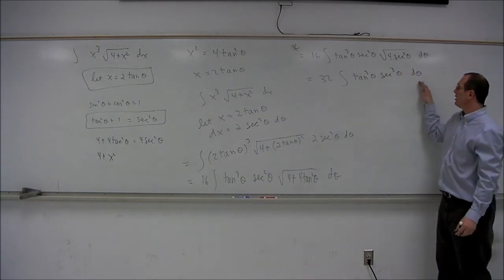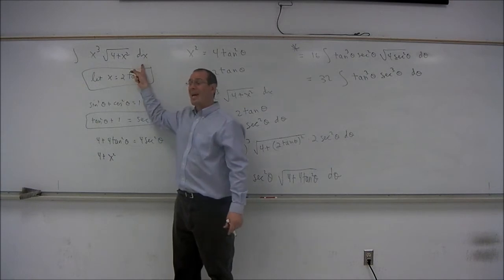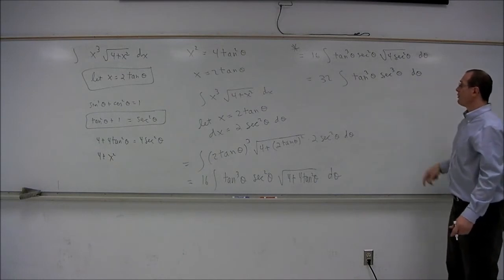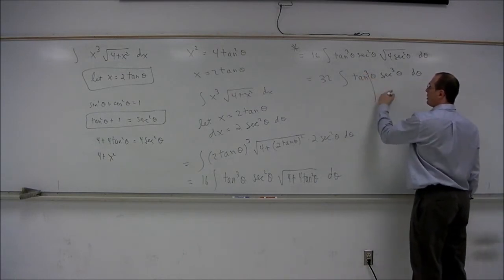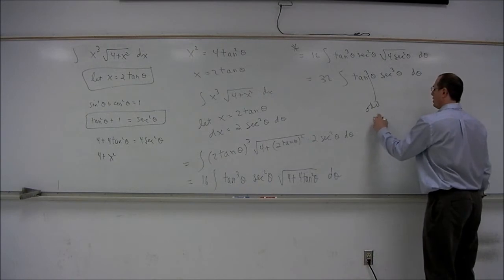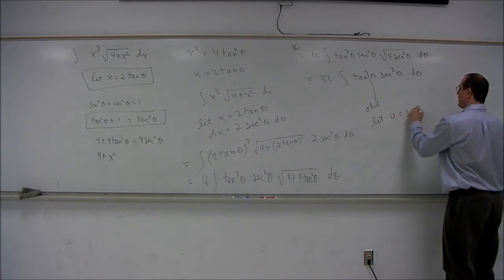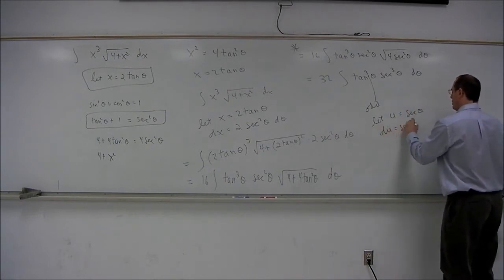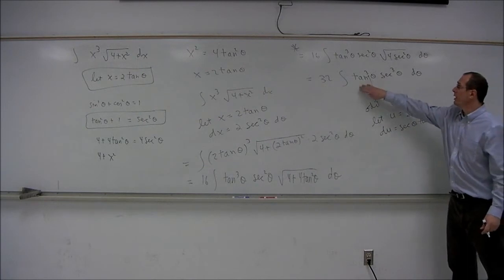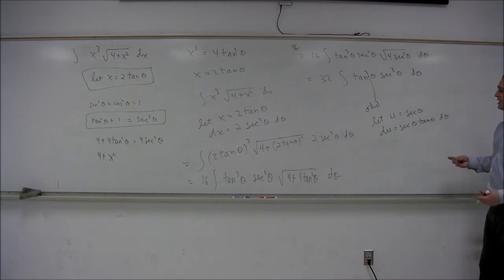Now we get a slightly tricky trigonometric integral. But notice first and foremost, we have transformed the problem from an integral in x involving a square root to a trigonometric integral. With a little study of trigonometric integrals, you recognize that when you're dealing with an odd power of the tangent in conjunction with secants, we can do a substitution like u equals the secant of theta and du equals secant of theta tangent of theta d theta. This is the pattern for solving it.